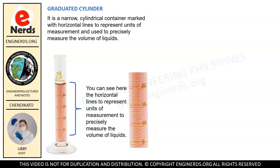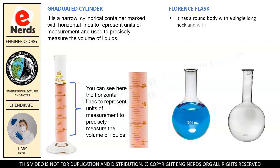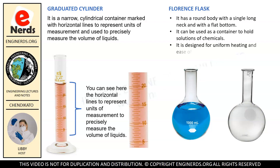Next we have the Florence flask. It has a round body with a single long neck and a flat bottom. It can be used as a container to hold solutions of chemicals. It is designed for uniform heating and ease of swirling. Take note of the shape of the Florence flask so you will not get confused when we start showing you the other types of flasks.